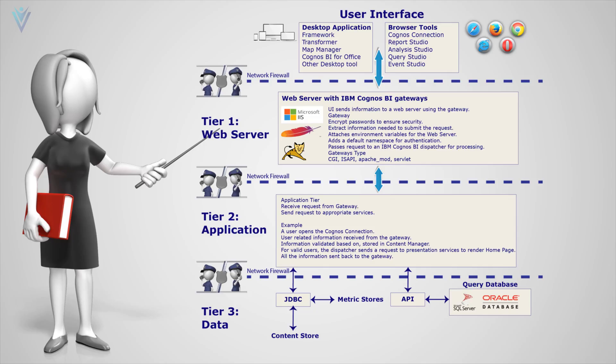We are going to check the IBM Cognos architecture diagram. This is a very simple IBM Cognos architecture diagram. In this we have three different tiers. The first one is the web server, which is responsible for generating the web UI. Next we have application server, which is for processing the end user request. And finally is the database server, which is used for storing the data.